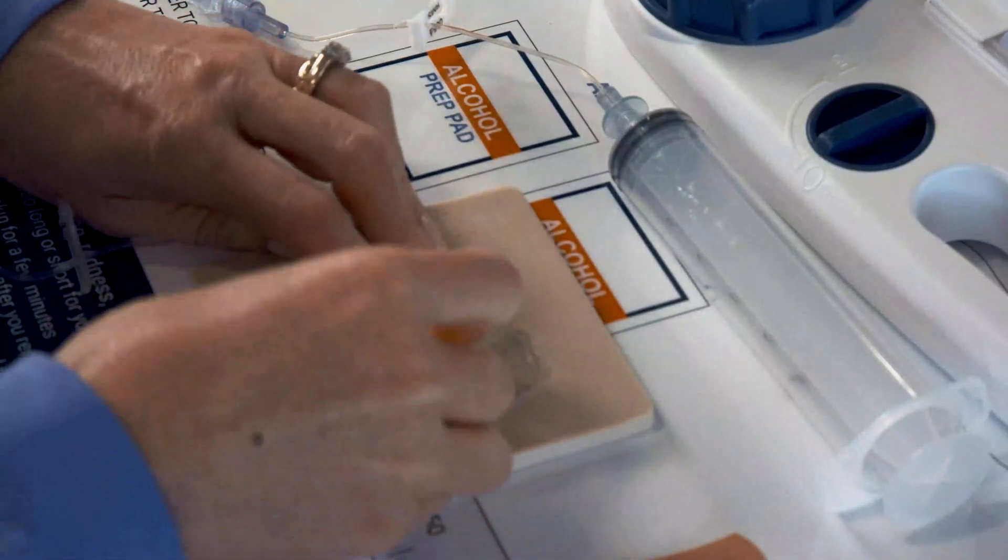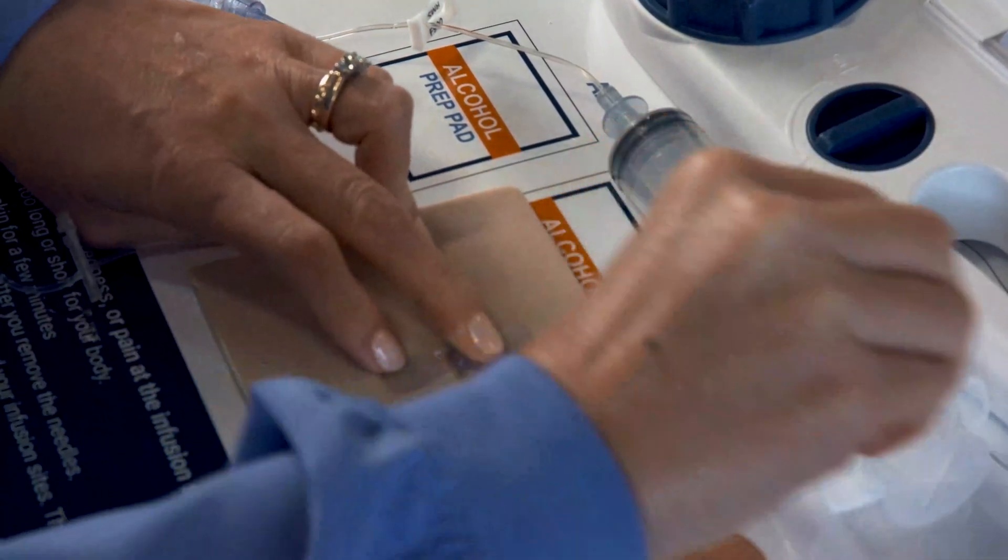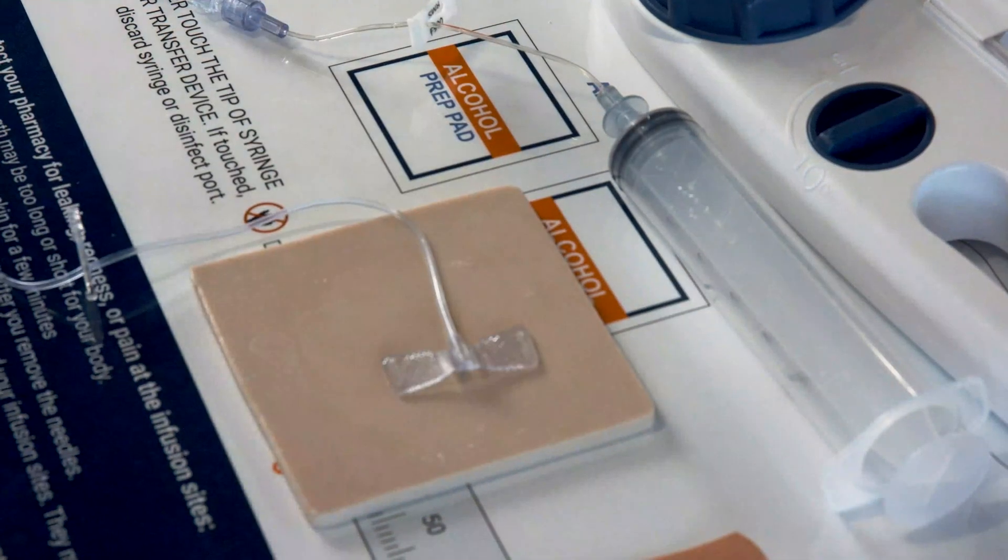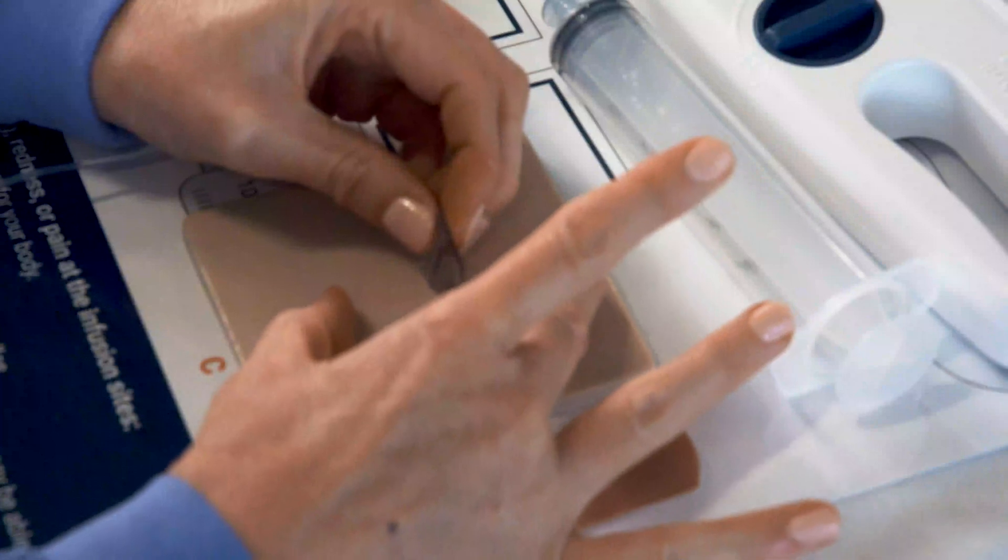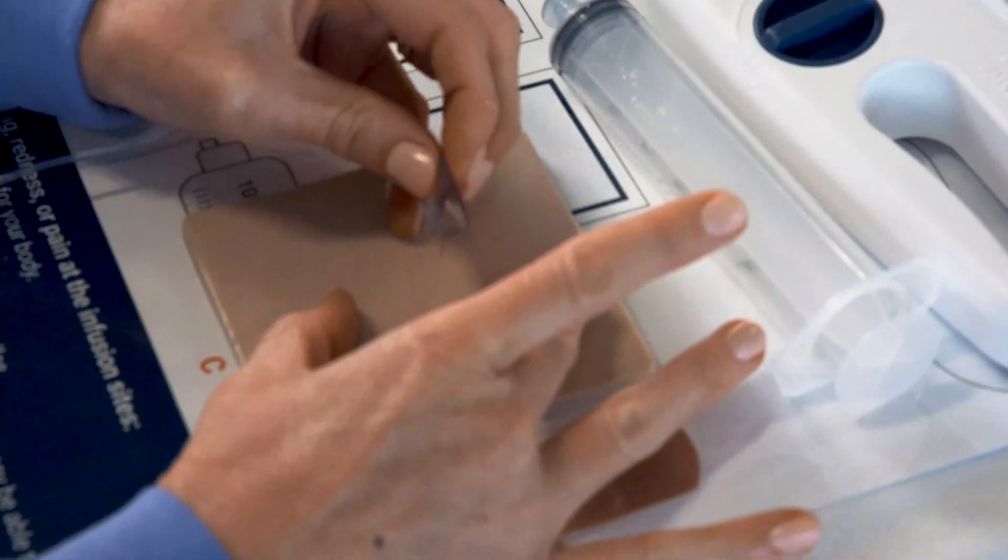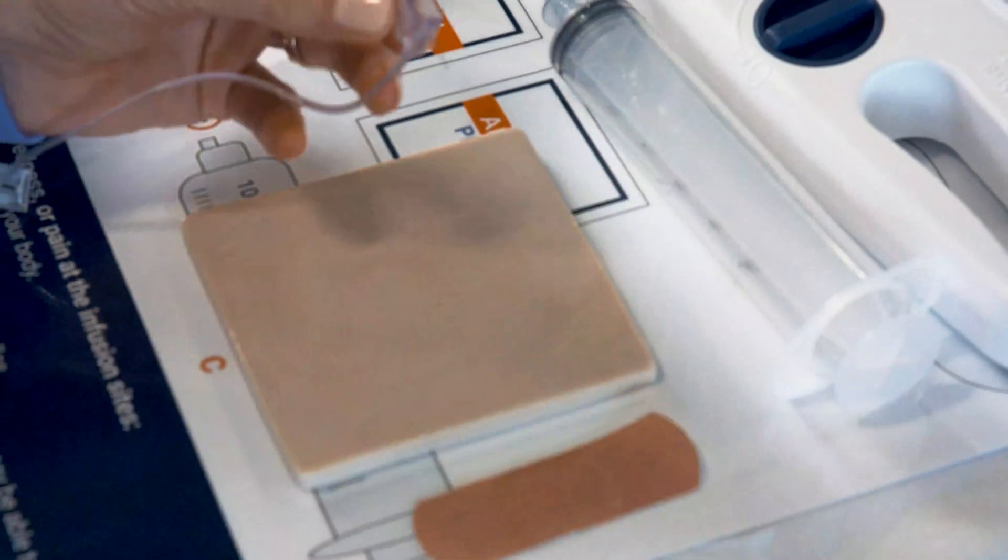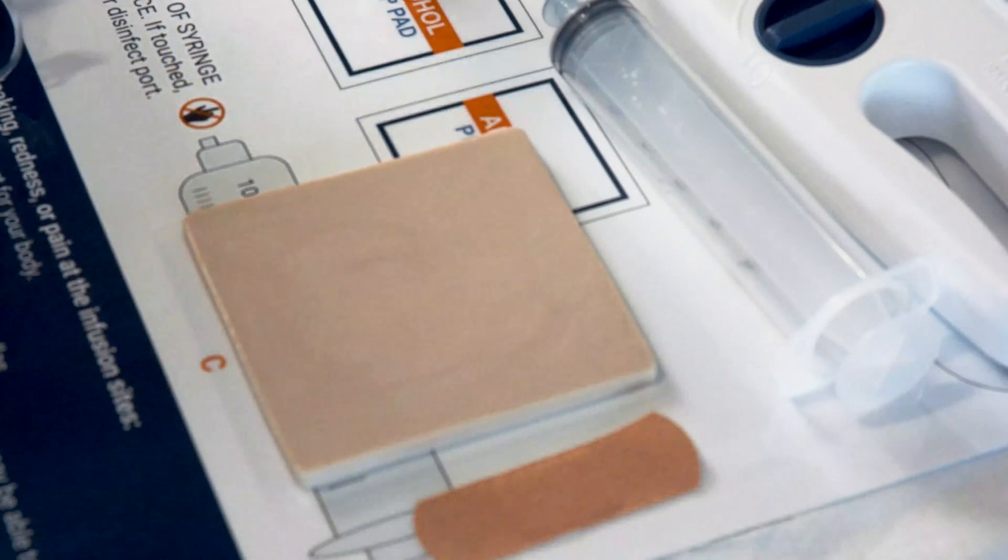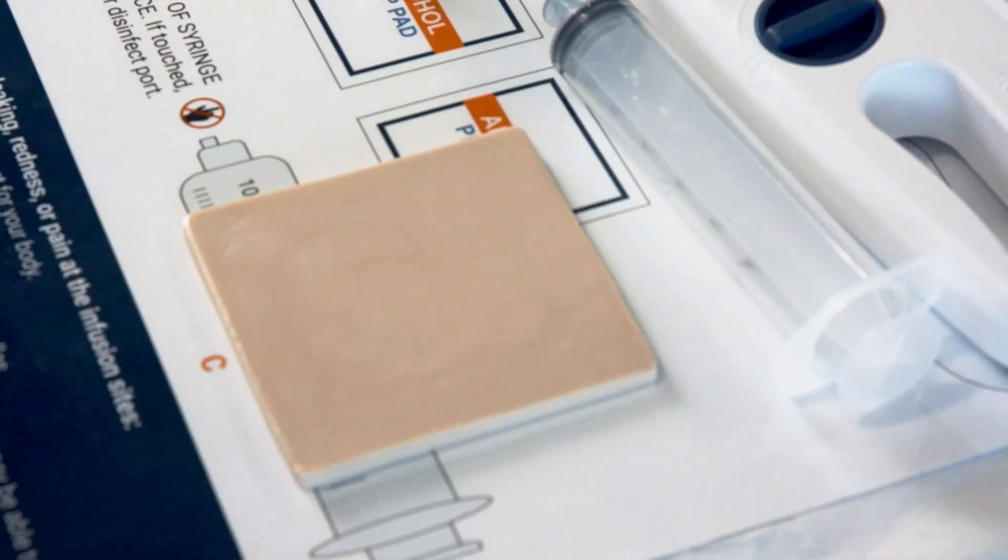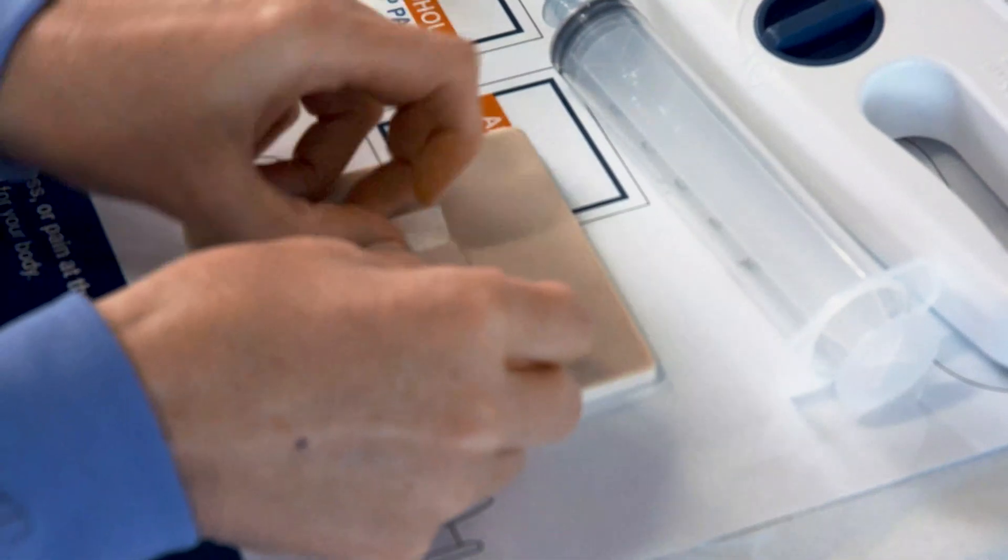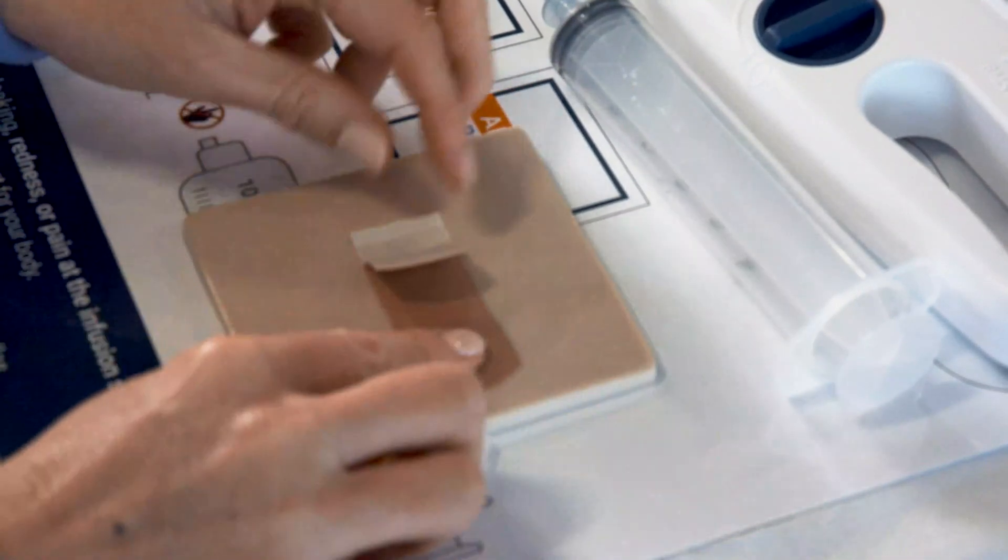To remove the needle sets, start by removing the transparent dressing from your skin. Then remove the needle set by holding your skin firmly and pulling the needles straight out in a steady motion. Apply a small dressing or band-aid to your insertion site. Repeat for each site.